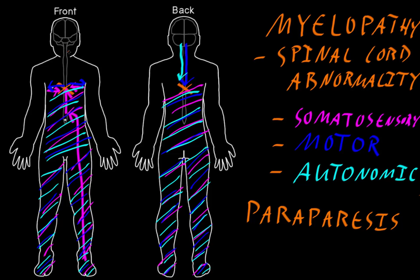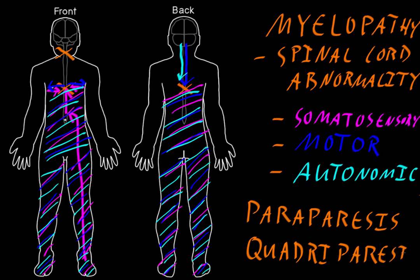If you have a myelopathy higher up, at or above where all those nerves go to the arms, then the arms as well as the legs may be affected. If there's weakness of all four limbs, the term used is quadriparesis — or quadriplegia if there's no movement whatsoever. There's also the term tetraparesis or tetraplegia, and both are in use. Quadriparesis is the older term but probably more commonly used.